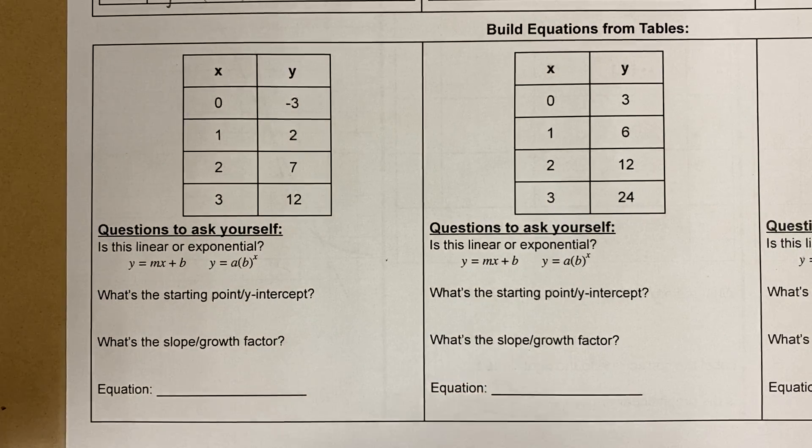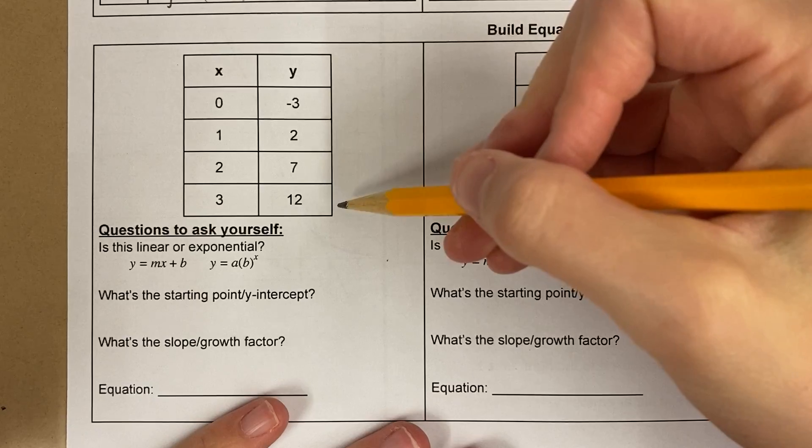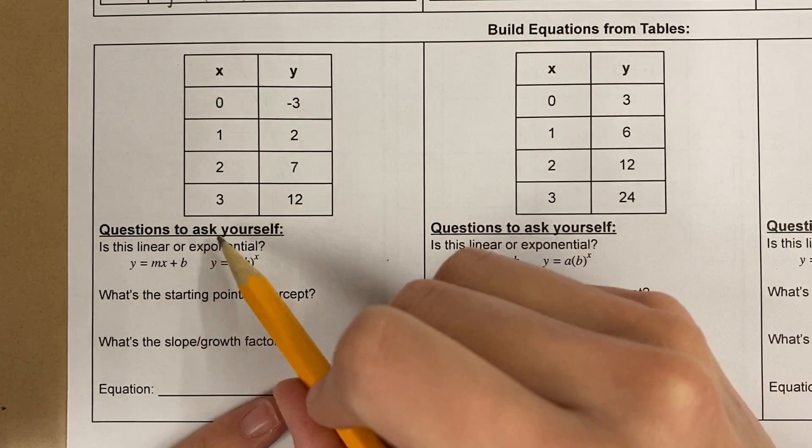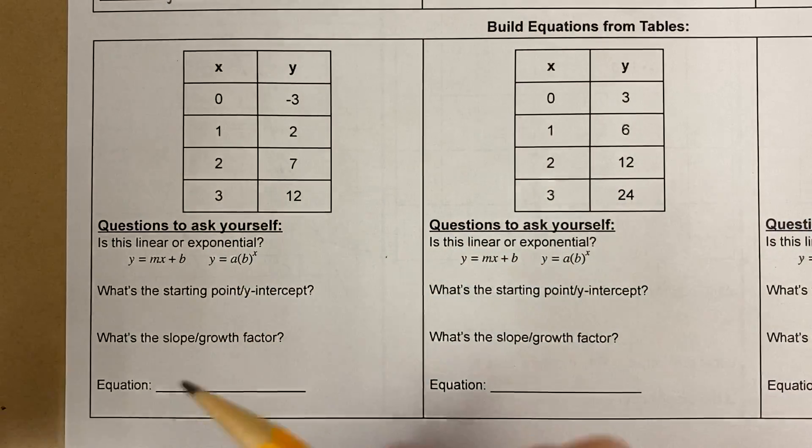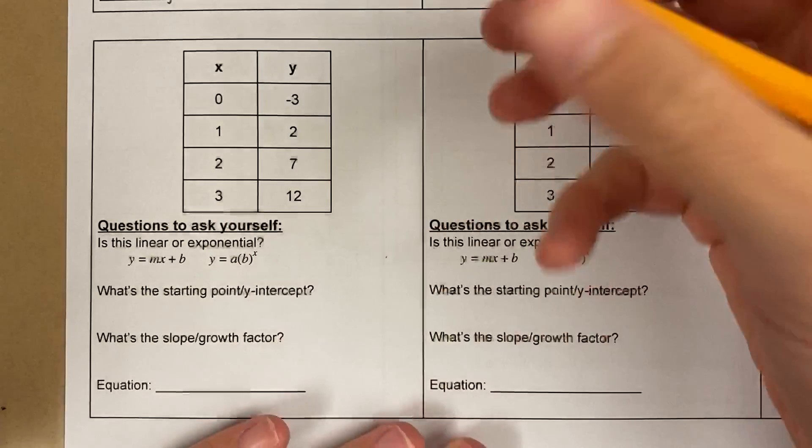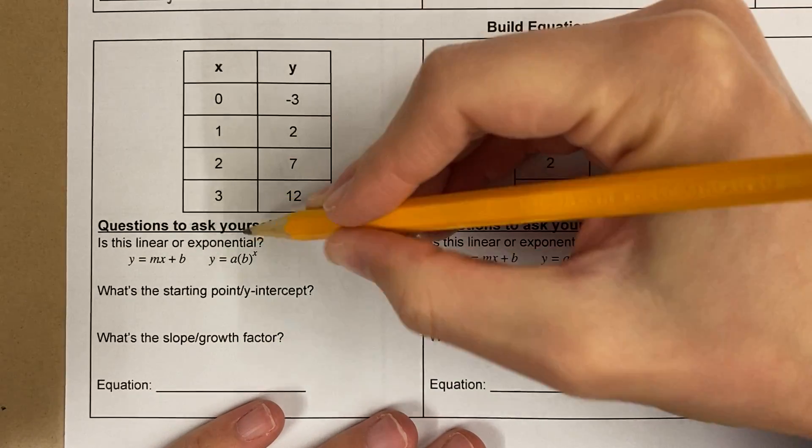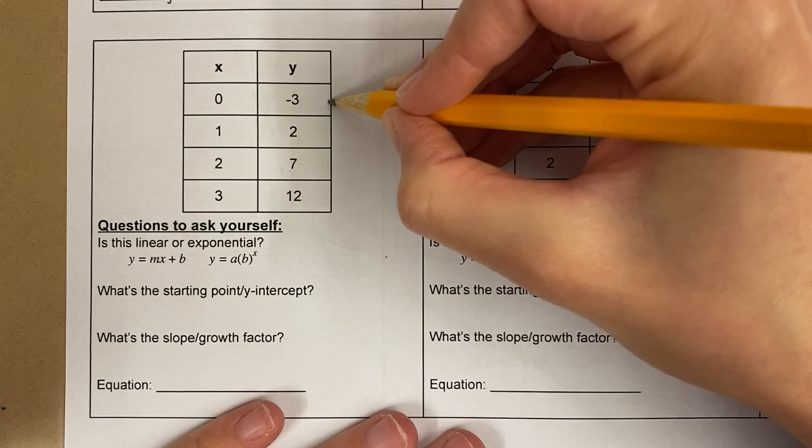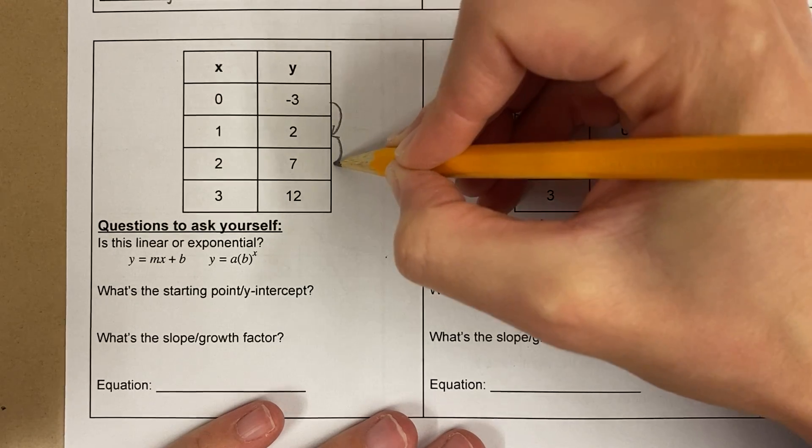Okay, in this case I am given a table. Now I need to ask myself some questions in order for me to be able to write the equation. The first question I'm gonna ask myself is, is it linear or exponential? And what I need to do is decide how am I getting from row to row?